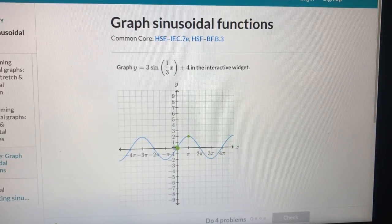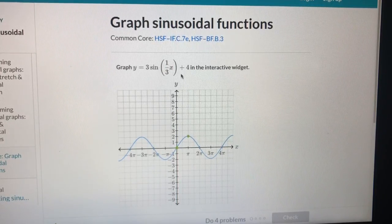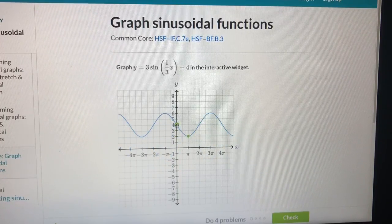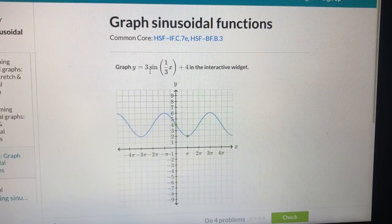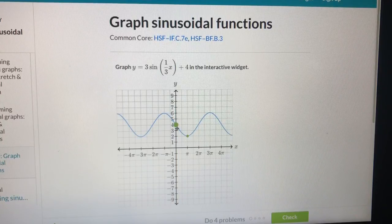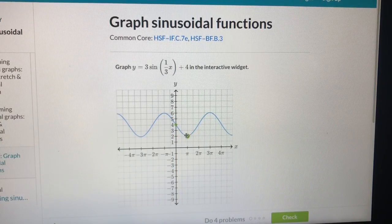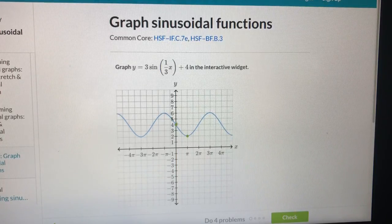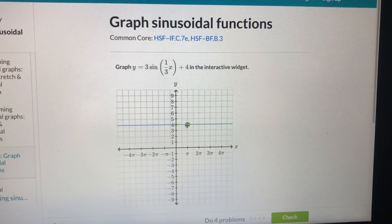So when I see this kind of problem, first I see the midline. I raise it to 4. And the coefficient is 3. The coefficient here is 3. It means its amplitude is 3.